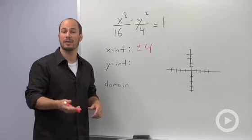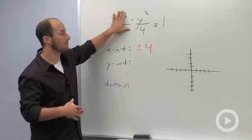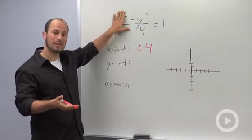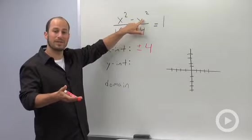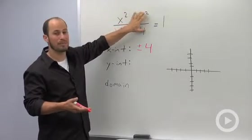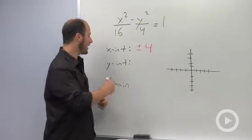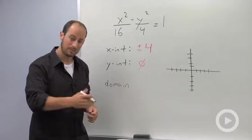To find our y-intercept, we let x equal 0. That makes this term disappear, and we're left with negative y squared over 4 equals 1. The trick here is that we have a negative y squared. y squared is always going to be positive, so what we end up with is a negative positive number equal to 1. That can't happen, so we actually do not have any y-intercepts.